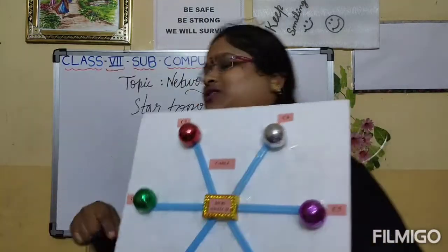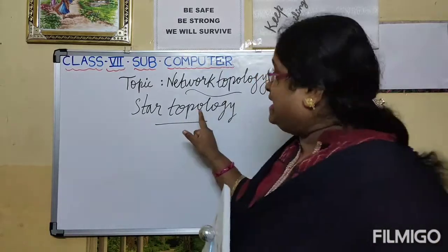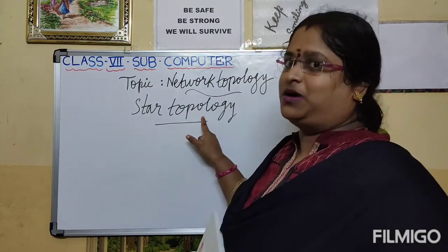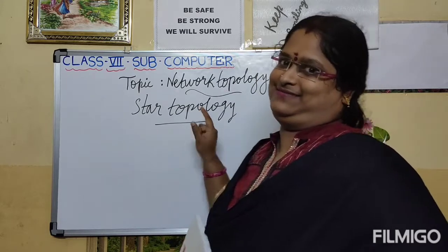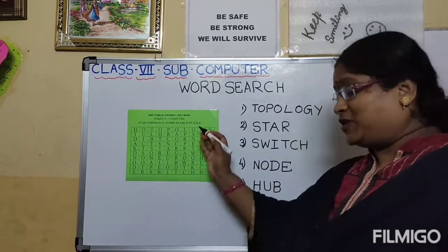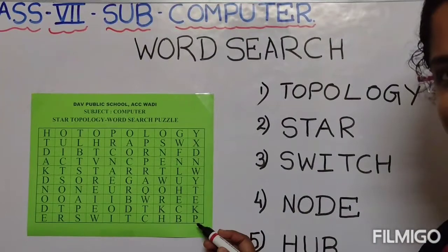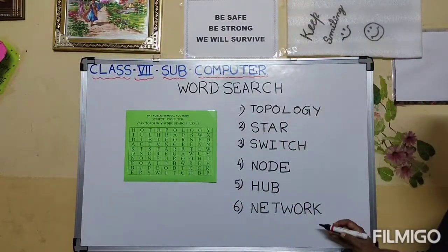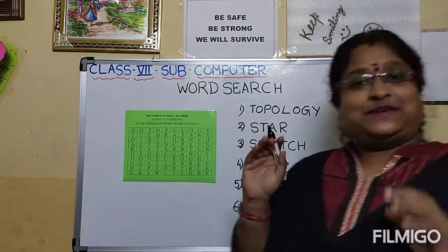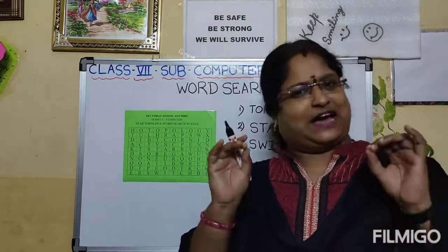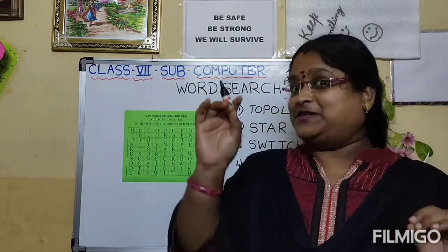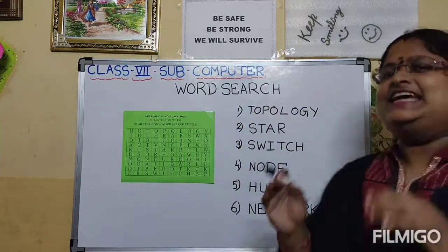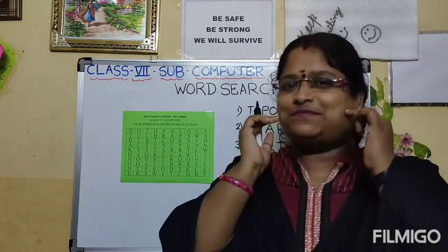I hope you all understood about star topology. In connection with this topic, I would like to give you a word search puzzle. Here is your word search puzzle — these are the words you have to find out. I will be waiting for your response. If your answers are correct, I will give you golden stars. I hope you will enjoy this activity. Thank you children, keep smiling.